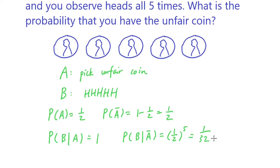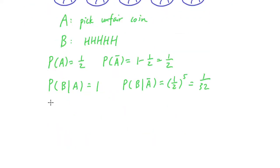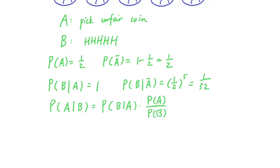So what is the question asking? The question is asking: what is the probability that you have the unfair coin given that you observe five heads? Let's apply Bayes' rule. P(B|A) is one, as we see here, and P(A) is also easy — it's one half. P(B) is a little harder, so let's calculate P(B).